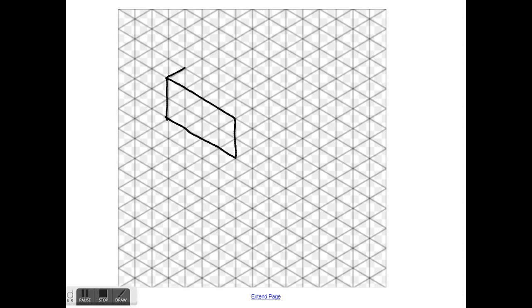1, 2, 3, so isometric paper helps you draw these three-dimensional shapes. That's the purpose of learning.